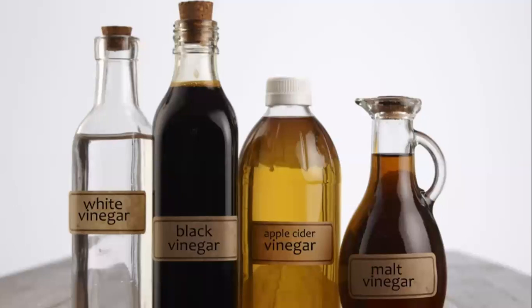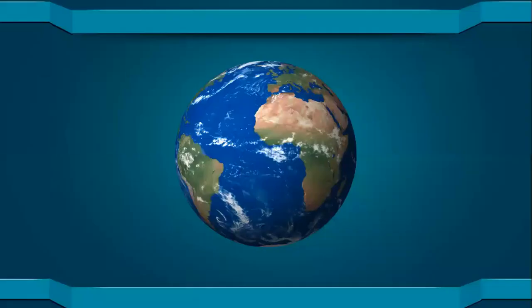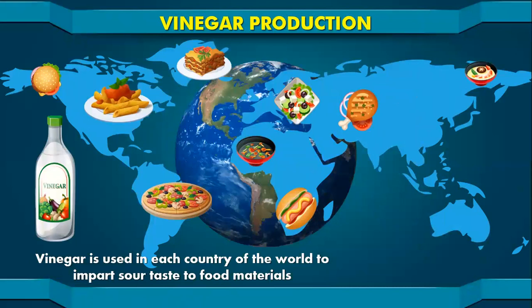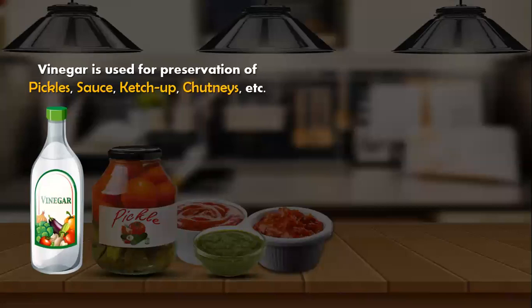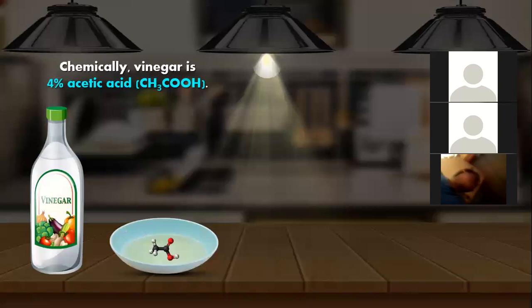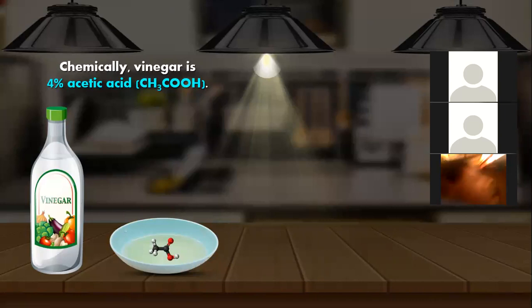Good evening. We are doing chapter number seven and eight today, starting with the first concept of chapter seven: vinegar production. We know that vinegar is used in each country for very different purposes, but the basic one is to give sour taste to food materials. Vinegar is used in preservation of pickles, orange sauces, ketchups, chutneys, etc. Chemically speaking, vinegar is four percent acetic acid.